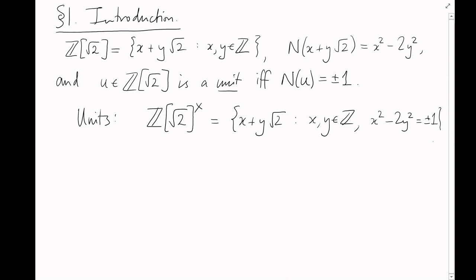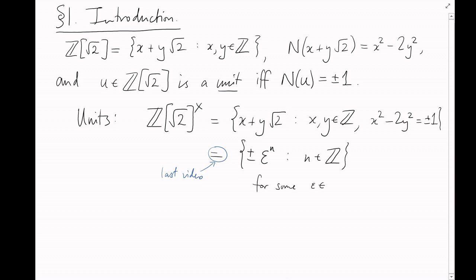Last video we worked out algebraically what this solution set looked like by passing to logarithm space. It's the set of all numbers of the form plus or minus ε^n, as n ranges over all integers, for some number ε. This number is called a fundamental unit because it can be used to build all the other units in this way.